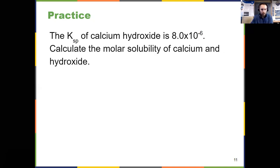Now working on it the other way, you're given the KSP and we're asked to calculate the molar solubility of calcium and hydroxide. Write the expression, plug in the KSP, solve for X. In this case, X, your molar concentration of calcium should be 1.3 times 10 to the minus 2.